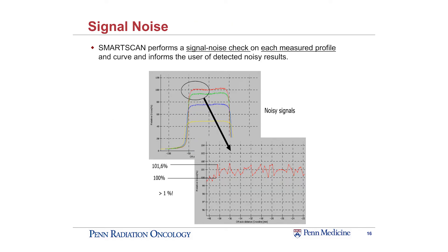The signal noise check is also something that's done in the background as you continually scan. It measures for each profile and curve what the noise is. I've always done a visual check as it's scanning, but this is a quantitative check. There's actually a number that you can either use the default from IBA, or input your own that you determine as a clinic. If it gets noisy, it'll prompt you that it's getting too noisy and to check what's going on. This is a good check so you get quality data that requires minimal processing after you're done scanning.